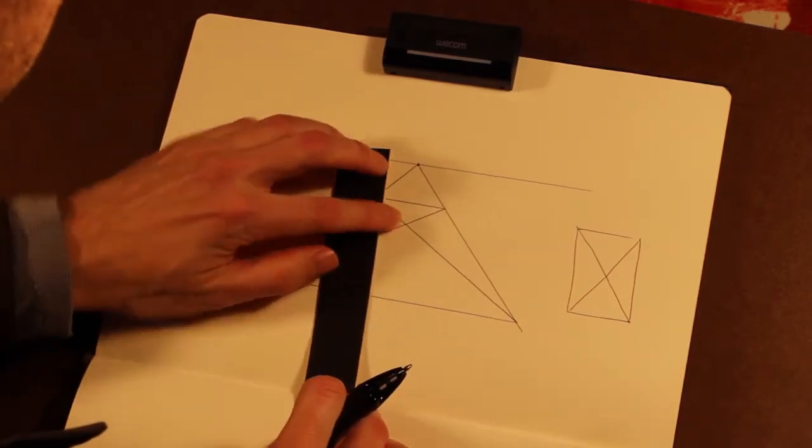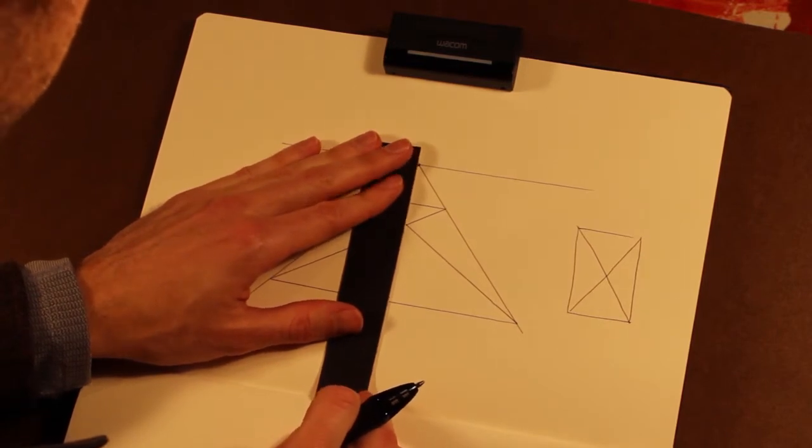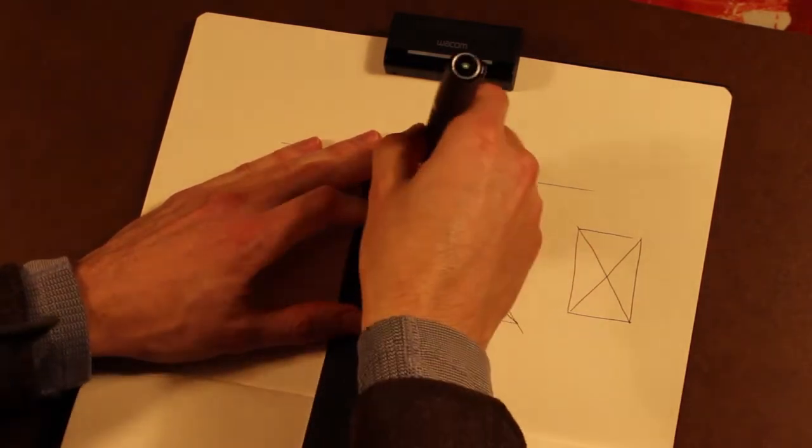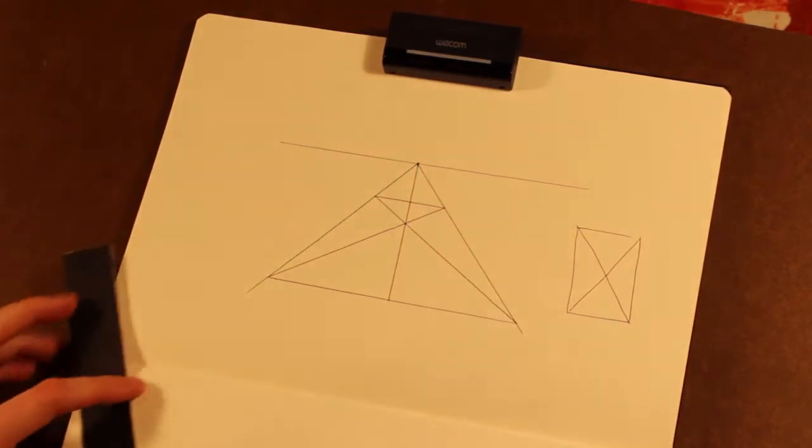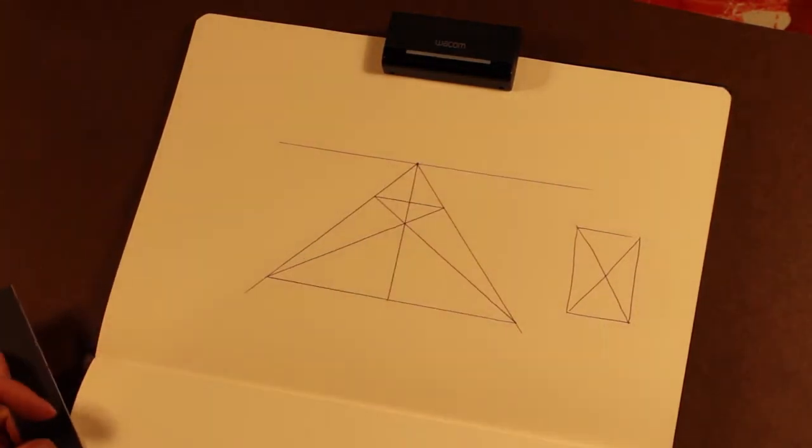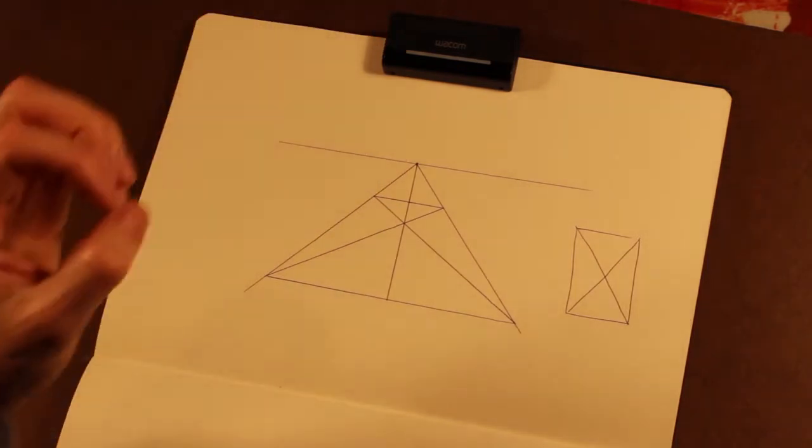So then you go from this center point that you just found to the vanishing point, and then you're just going to draw a line down. Bam. So now you've found the vertical center of a plane, and this can be applied in any direction, any angle.